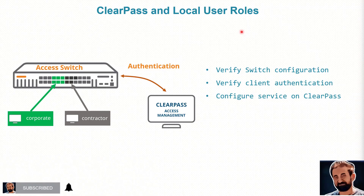Once the client authenticates, ClearPass will send back something called a VSA — Vendor Specific Attribute. Based on the authentication or the connected device conditions in the role, we will assign things like VLAN, quality of service, tagged VLANs, multiple tagged VLANs, and so on. This gives more flexibility than simply sending back a VLAN from ClearPass.